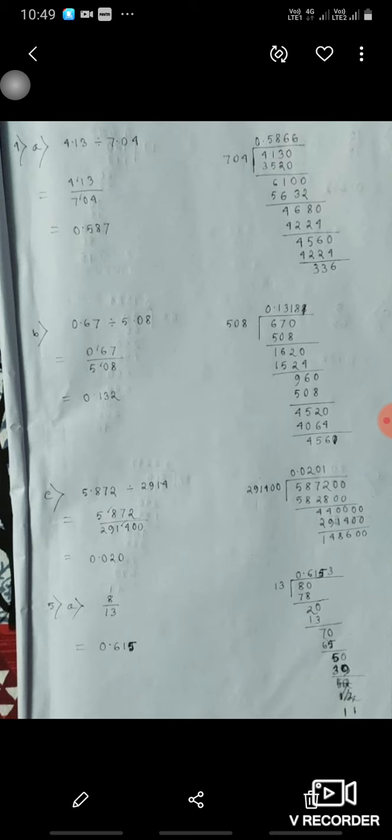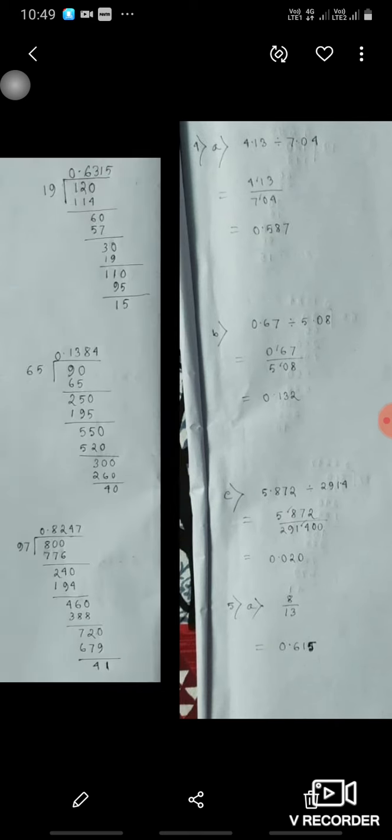Here 8 divided by 13. So as we see, it will be continued on dividing, we will put decimal just up to 3 decimal places: 0.615. Now 12 divided by 19, only up to 3 decimal places we will take.